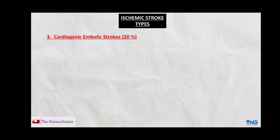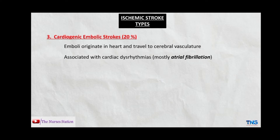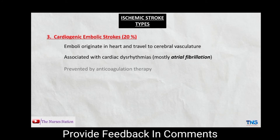The third type is cardiogenic embolic strokes, accounting for 20% of ischemic strokes. These result when emboli originate in the heart and travel to the cerebral vasculature, occluding the blood vessels there. They are usually associated with cardiac dysrhythmias like atrial fibrillation. In atrial fibrillation, the upper two chambers of the heart beat irregularly, increasing the chances of clot formation, which can block blood vessels and result in ischemic stroke. These types of strokes can be prevented by anticoagulation therapy.